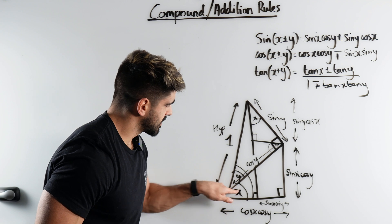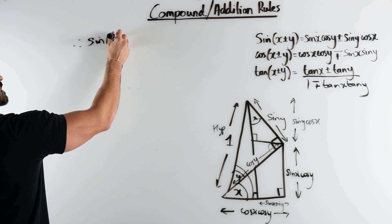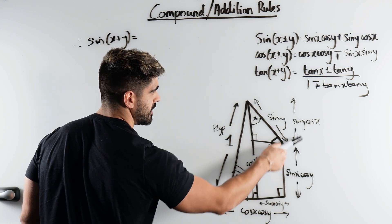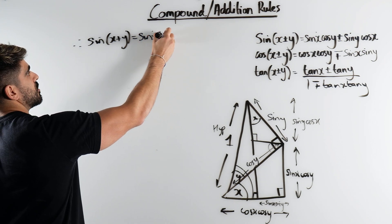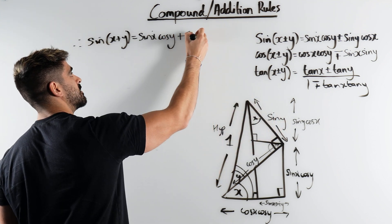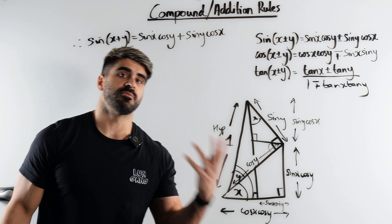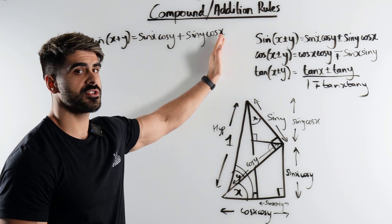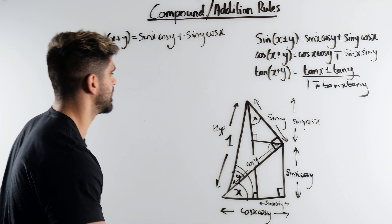So, sin of x plus y, therefore, is the opposite: sin x cos y plus sin y cos x. The way my students remember this is very simple — sin goes sin cos, sin cos, and sin keeps the sign the same. Easy peasy, squeeze the lemon.